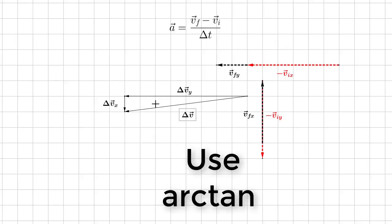If you've done this on paper, finding the magnitude of delta V is a relatively easy Pythagorean theorem. Finding the direction, all you really need to do is use the inverse tangent.